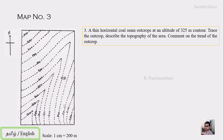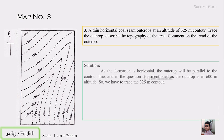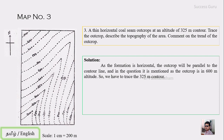What we are given is a horizontal formation at an altitude of 325 meters. As we discussed in a previous class, if the formation is horizontal, it will be parallel to the contour. Since the question mentions 325 meters, we have to mark that height. But in this map you can see contours at 200, 250, and 350 — there is no 325.